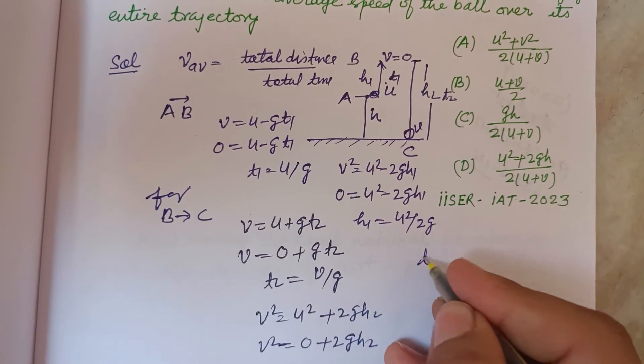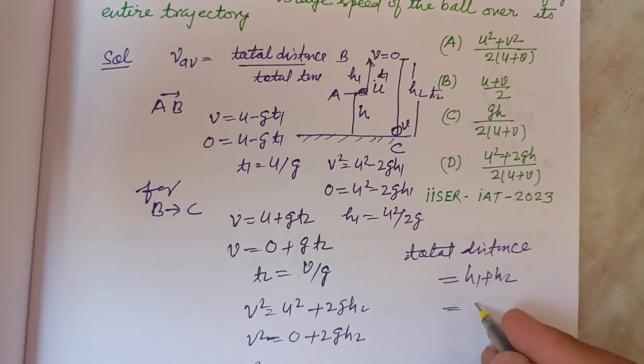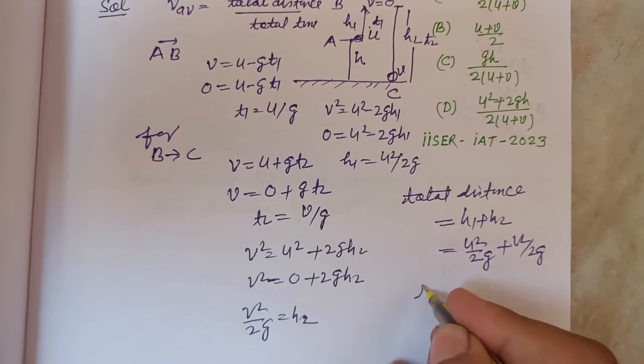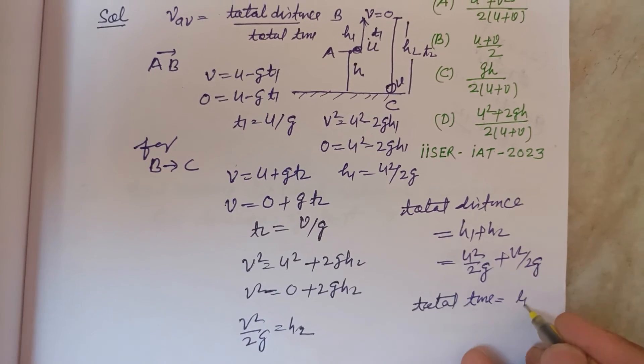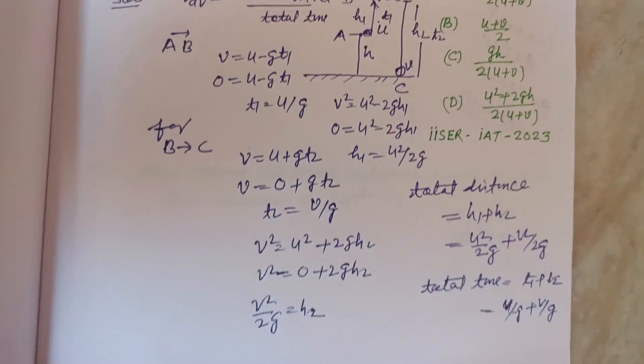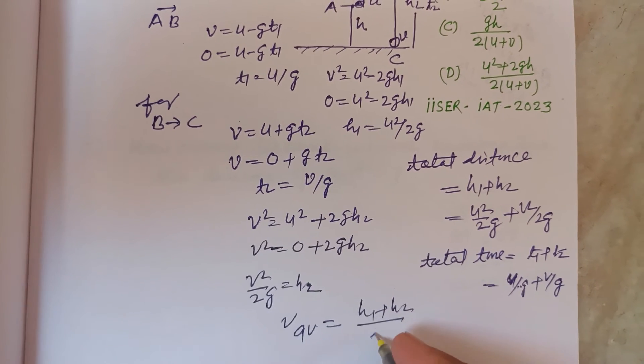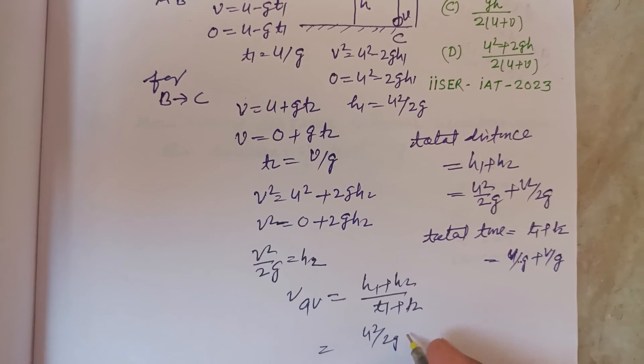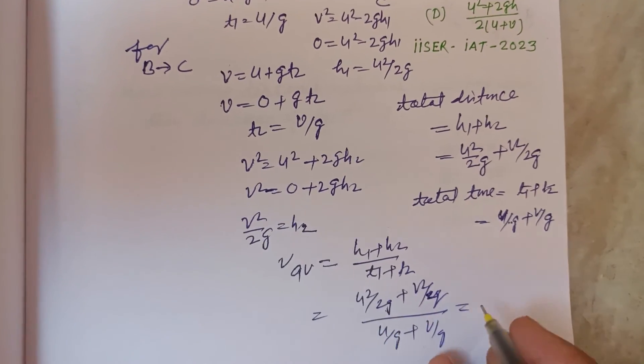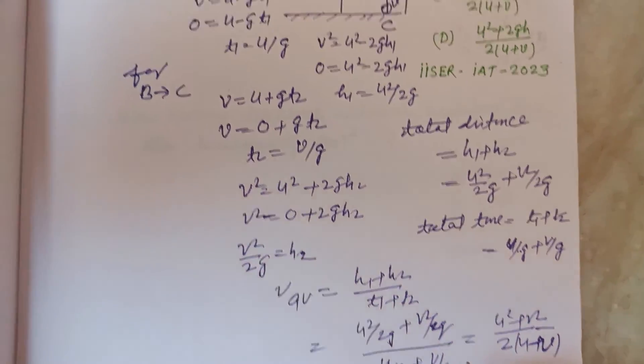Now total distance covered is h1 plus h2. h1 is U squared upon 2g and h2 is V squared upon 2g. Total time is t1 plus t2, that is U upon g plus V upon g. So V average equals total distance upon total time: h1 plus h2 over t1 plus t2. This is U squared upon 2g and V squared upon 2g over U over g plus V over g. The g cancels, we get U squared plus V squared upon 2 times U plus V. This is the correct answer which is found in option A.